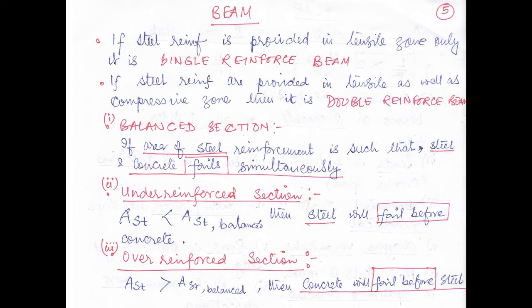The third one is the over-reinforced section. It is just the opposite of under-reinforced — that means if the area of steel provided is more than the area of steel needed for a balanced section, the concrete will fail first before steel. That is called the over-reinforced section of a beam.